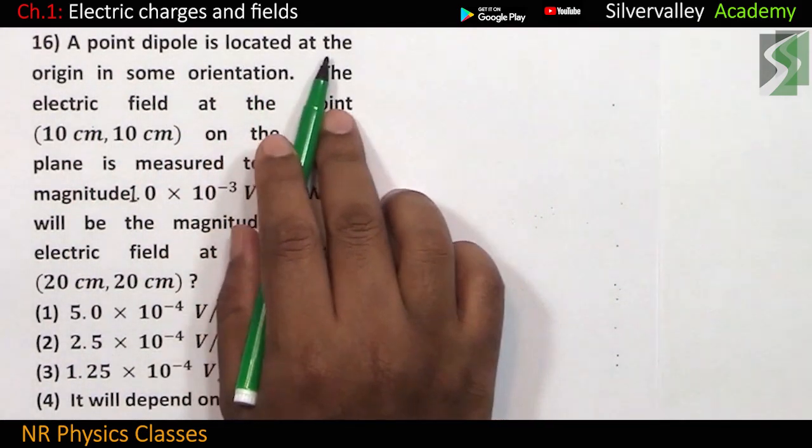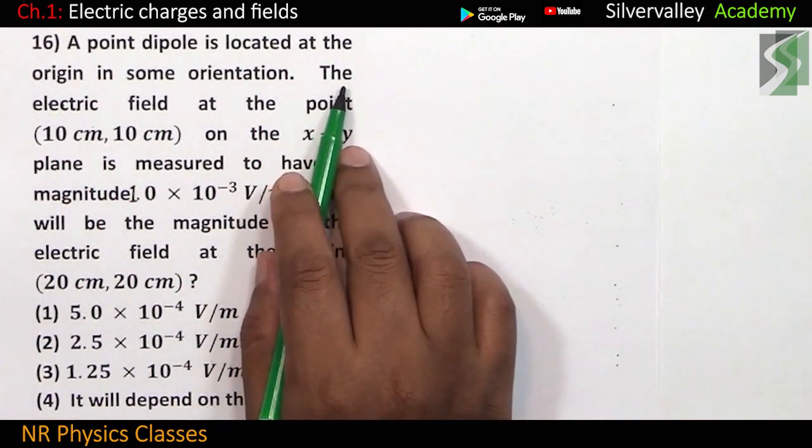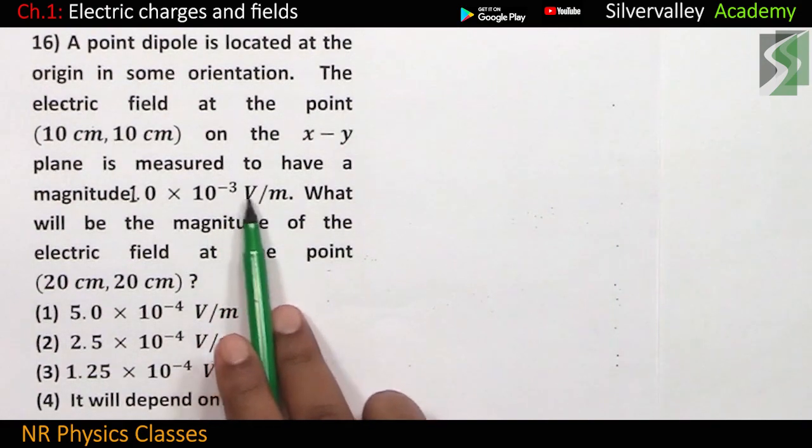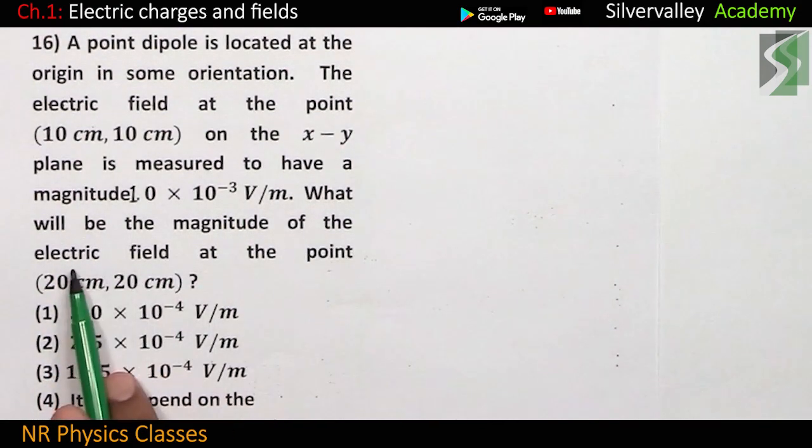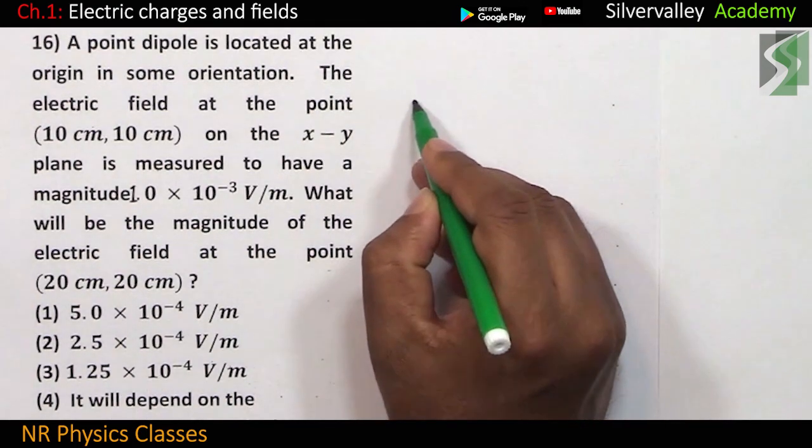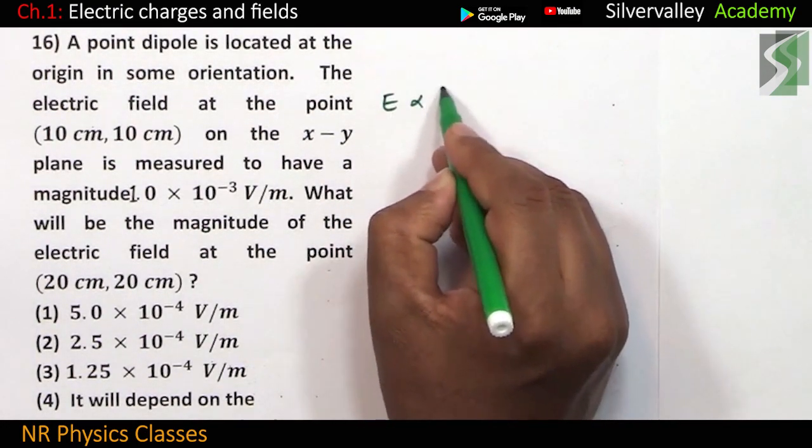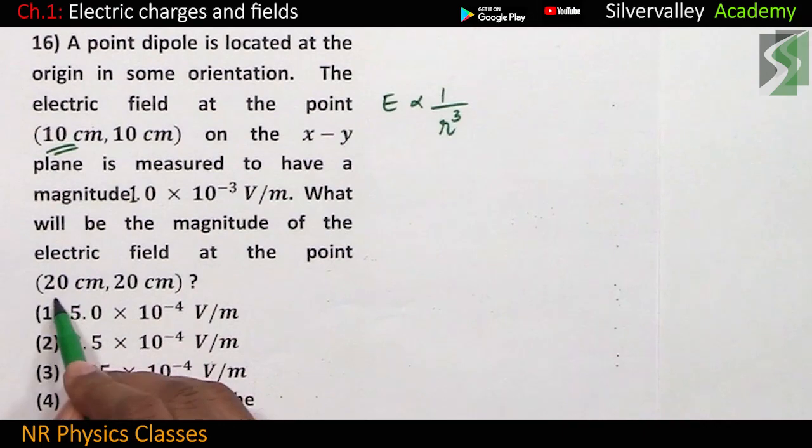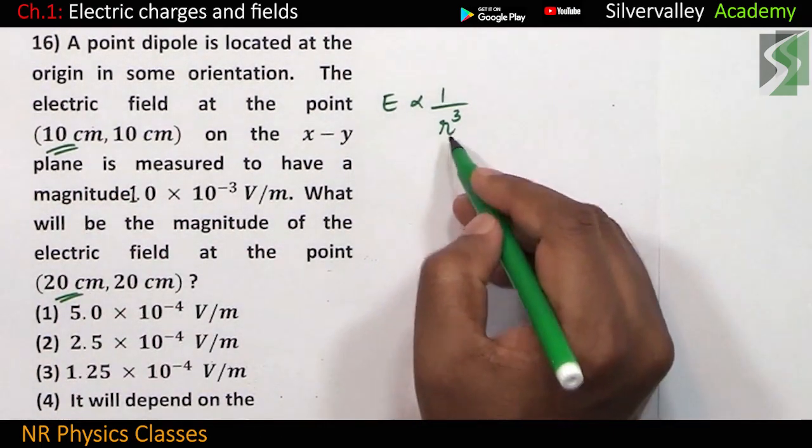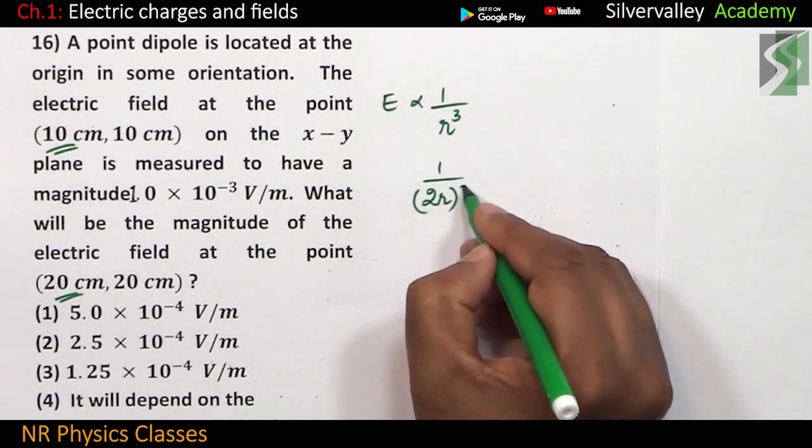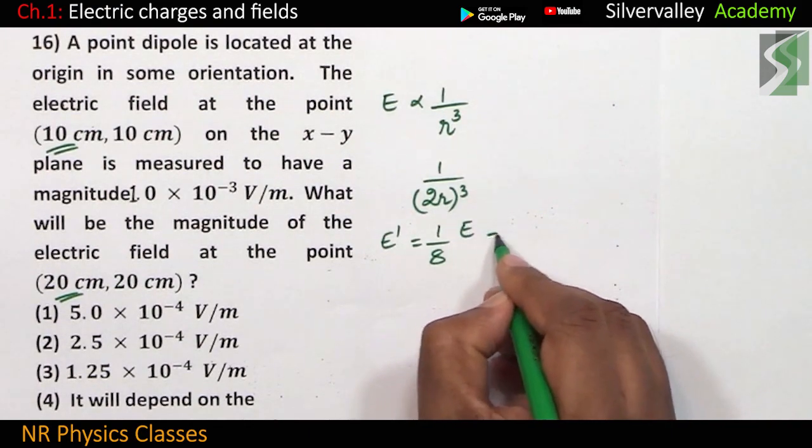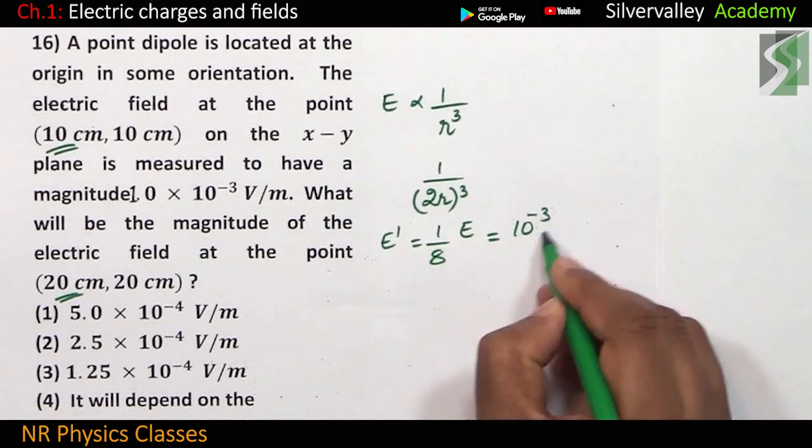A point dipole is located at the origin in some orientation. The electric field at the point 10 comma 10 on the xy plane is measured to have magnitude 10 to the power minus 3 volt per meter. What will be the magnitude of the electric field at the point 20 comma 20? Electric field is inversely proportional to cube of the distance. 10 centimeter to 20 centimeter means distance is doubled. Distance is doubled means 1 by 2r whole cube. 2 cube is 8. Therefore, new electric field is 1 by 8 times the electric field at 10 centimeter.